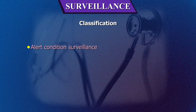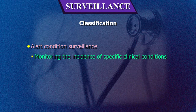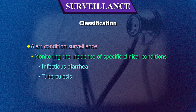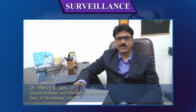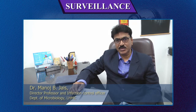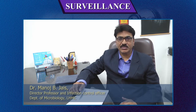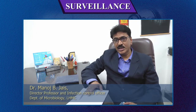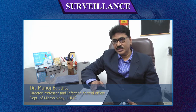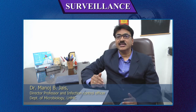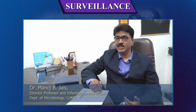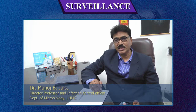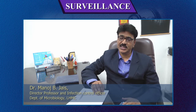Alert condition surveillance is the monitoring of the incidence of specific clinical conditions such as infectious diarrhea, tuberculosis, or dengue. Every hospital should have an infection control committee and an infection control team to perform surveillance of hospital-acquired infections. Data is collected from the hospital, analysed, and feedback is given to the concerned physician so that proper action can be taken to reduce infection rates in respective wards.